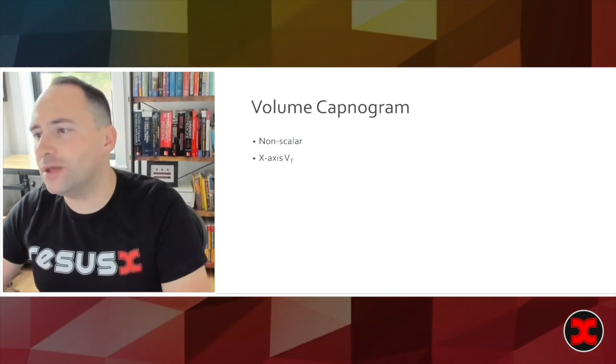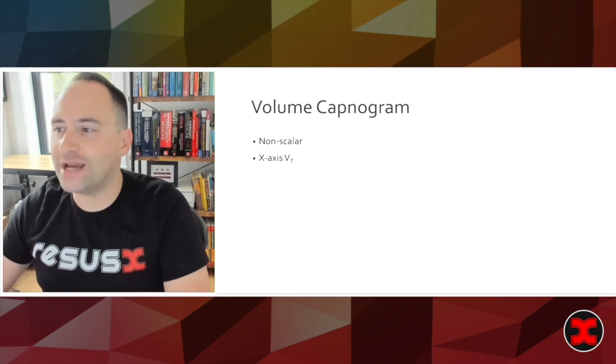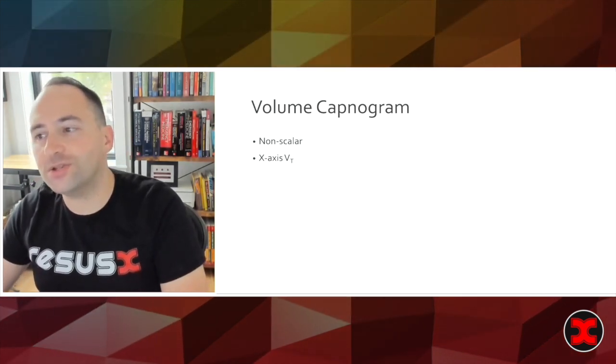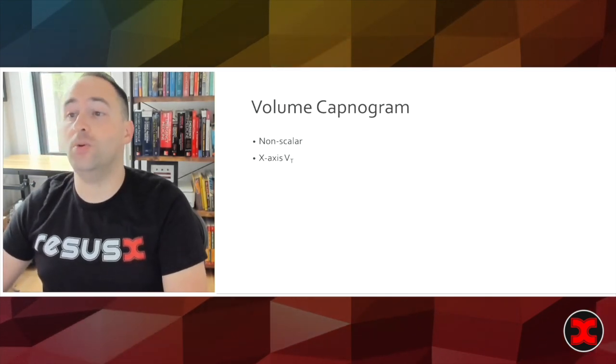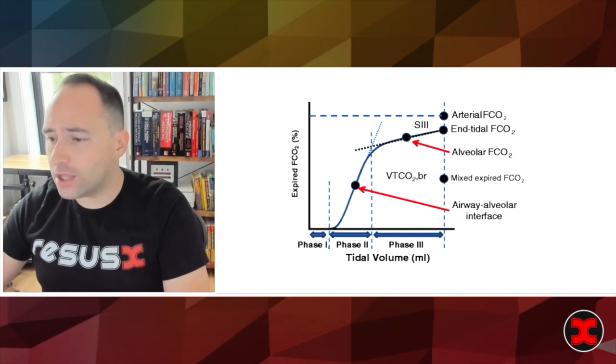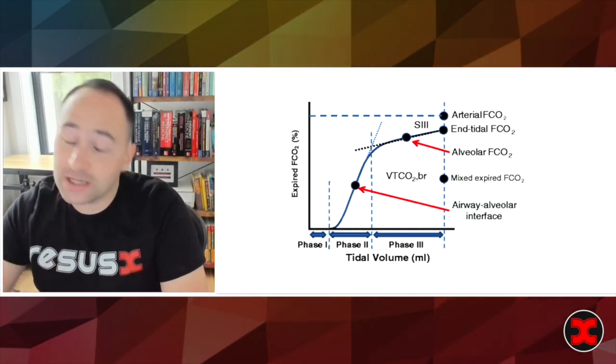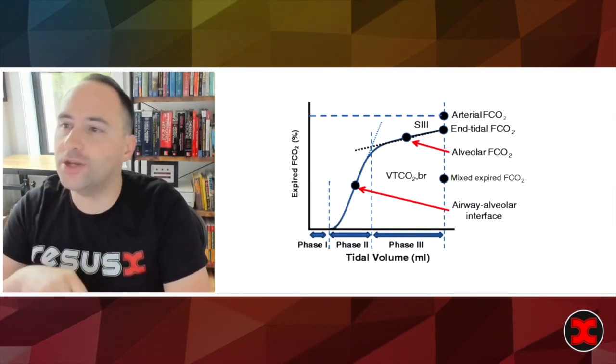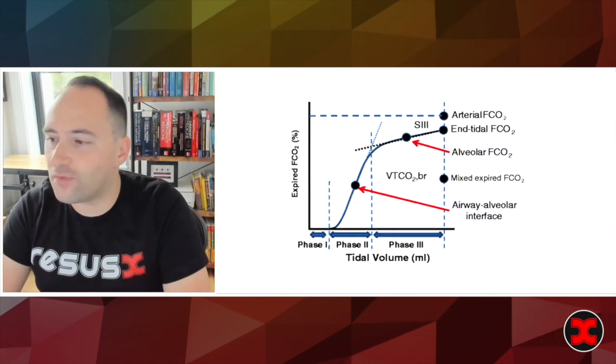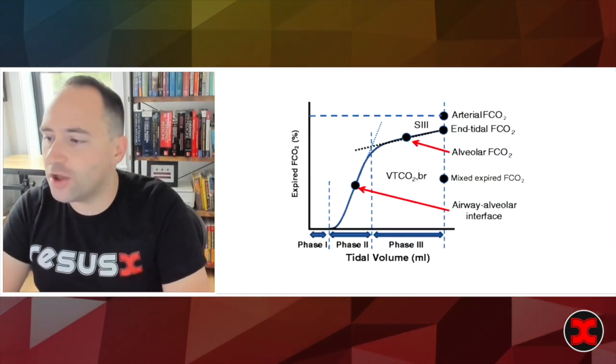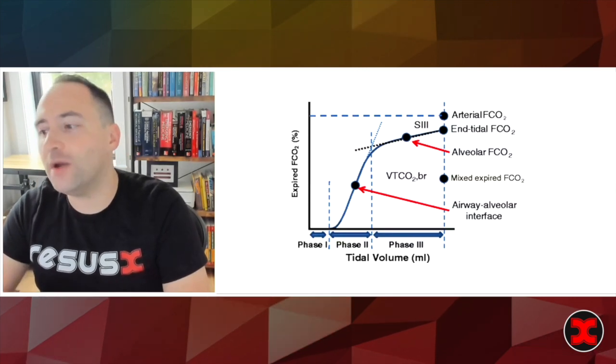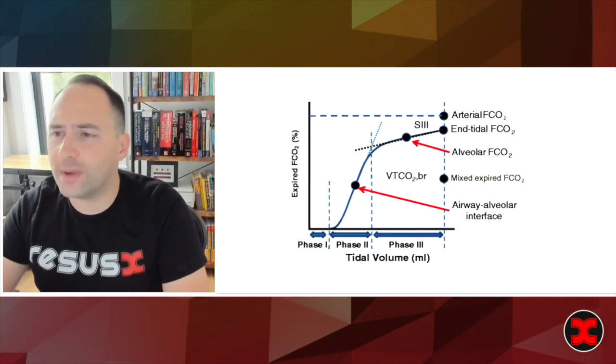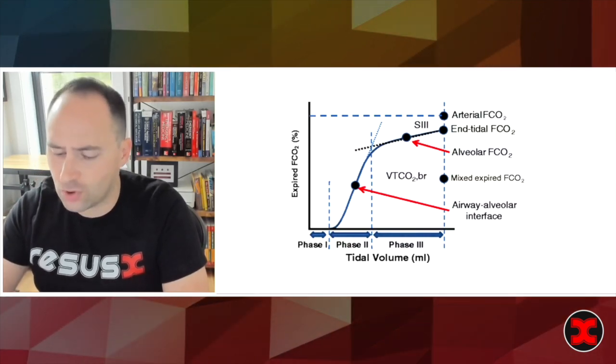You'll also see existing in the literature something called a volume capnogram, which is not a scalar. It is really not something that varies with time, where your x-axis is in fact your tidal volume and your y-axis is your end tidal value. So the volume capno has a lot of utility in both the intensive care units and the emergency department, but its uptake is not yet universal. So check the manuscript at the bottom of this slide for one of my favorite references. The utility in volumetric capno, which is what we see here where you have tidal volume on the x-axis instead of time, is largely in optimizing your mechanical ventilation settings and its interpretation requires some practice.